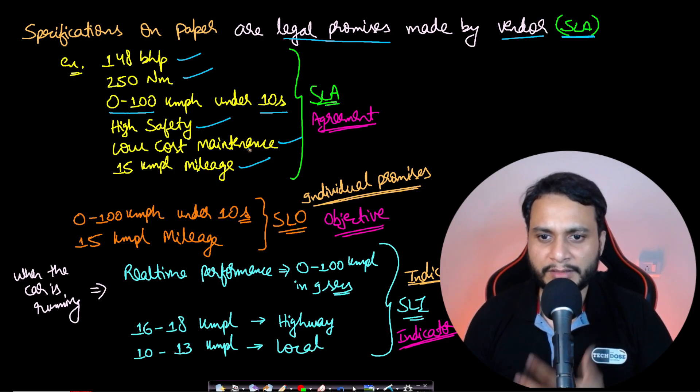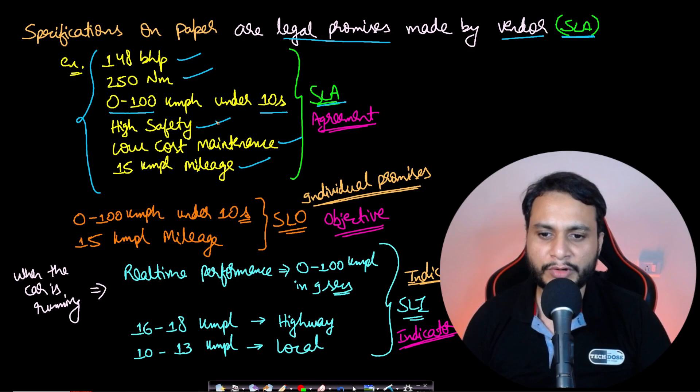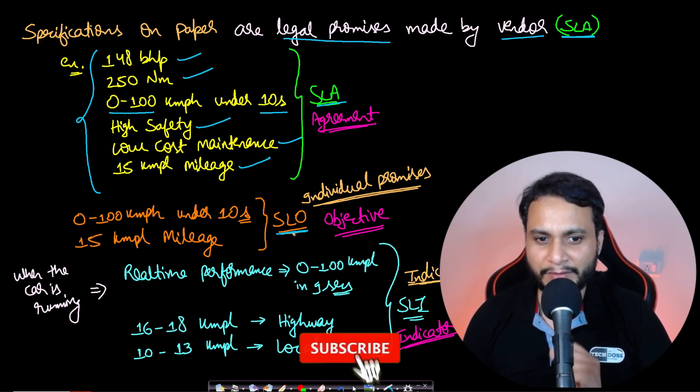These all can come under the service level agreement. Now out of all these, the vendor may not be interested in all of them to be monitored. When they are making the car, they will be very specifically taking certain things into consideration, and those all things come under the service level objective. These are the individual things which they are focusing on - individual objectives.